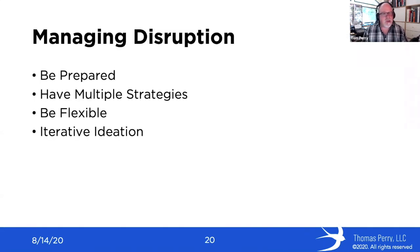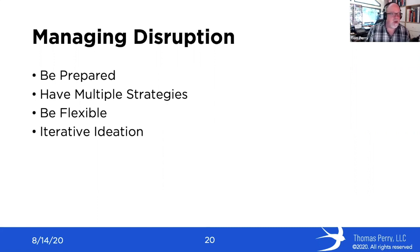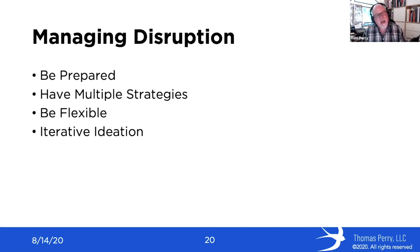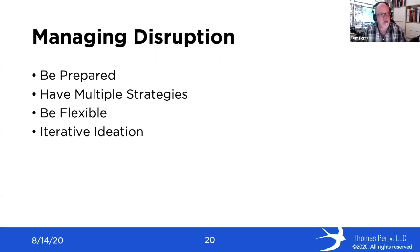As we're doing this, we need to be looking at the longer-term picture: disruption is going to be a constant for us. Things like the pandemic are going to occur over and over again, so we need to be prepared. We need to have multiple strategies in our hip pocket. We need to be flexible and constantly engage in this kind of iterative ideation, getting fluent at coming up with new ideas, because now more than ever we're going to be required to do so as these challenges come at us faster and faster.